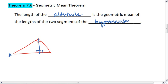So if we label this A, B, C, and D, we see that BD is the geometric mean of AD and DC. This means that BD, that value squared, is going to equal AD multiplied by DC.